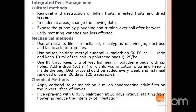Coming to pest management: under cultural methods, remove and destroy fallen fruits, infested fruits, and dried leaves. In endemic areas, change the sowing dates. Early maturing varieties are less affected than late maturing varieties. Deep ploughing of the soil exposes the pupae and they will die. Under mechanical methods, use attractants like citronella oil, eucalyptus oil, vinegar, dextrose, and lactic acid for trapping adult fruit flies. Using the poison baiting technique, methyl eucalyptus oil and malathion 50 EC are mixed in a 1:1 ratio and kept in 10 ml quantity in polythene bags at the rate of 25 per hectare.